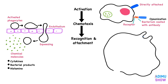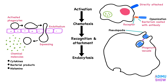After attaching to the neutrophil, the cell surface membrane engulfs the pathogen by using finger-like protrusions called pseudopodia. The pathogen is then enclosed within a phagocytic vacuole.